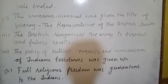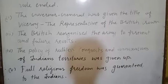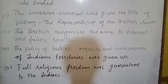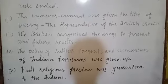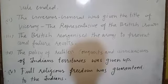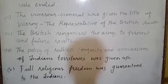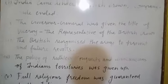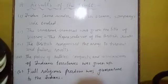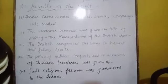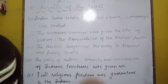So these are the results of the Revolt of 1857 — the steps which were taken by the British after the suppression of the revolt. By the end of 1859, British authority in India was fully established.